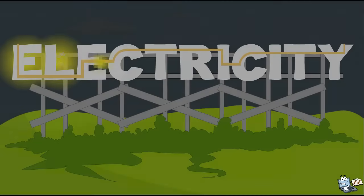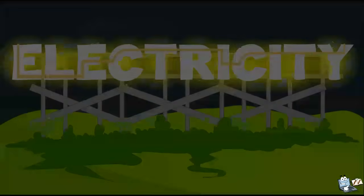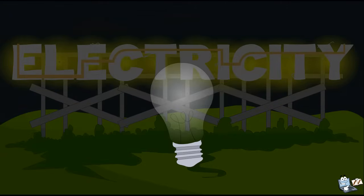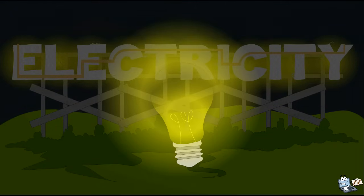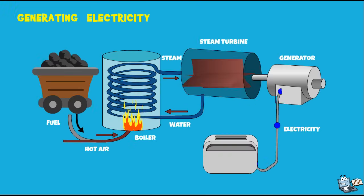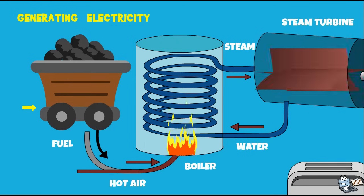It takes a lot of work to generate this magical thing called electricity. Let's first learn the most popular way to generate electricity. We get electricity by simply changing other forms of energy. For example, we can burn coal or many other fuels, which converts chemical energy into thermal energy, or heat energy.